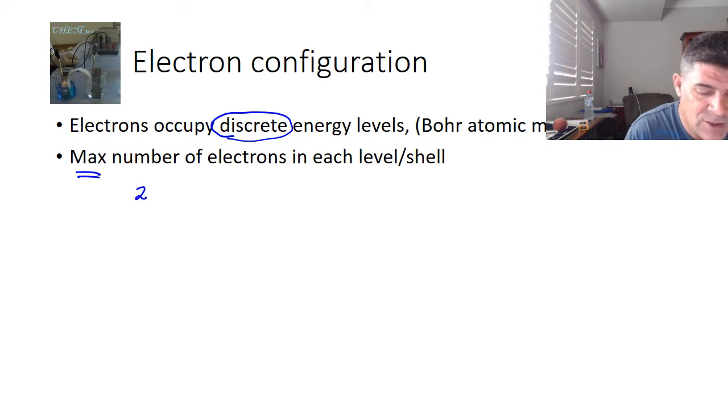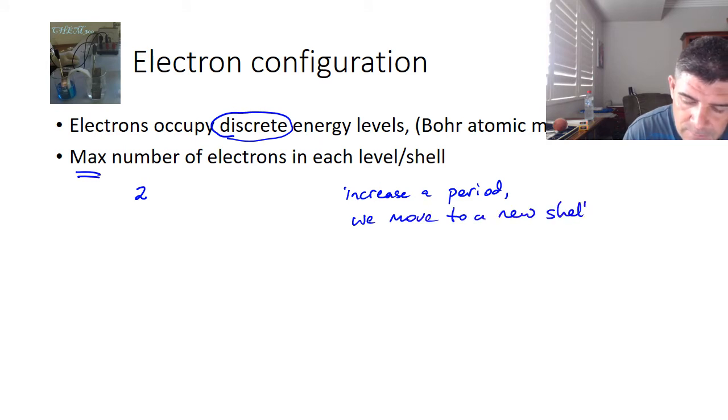At this point in time, we've looked at the fact that the first energy level, and if we look at the periodic table and I have one in a later slide, that as we increase a period, we move to a new shell. So, simply put, that means for period 1, only hydrogen and helium are in that period, so there's only two electrons that occupy that first shell.